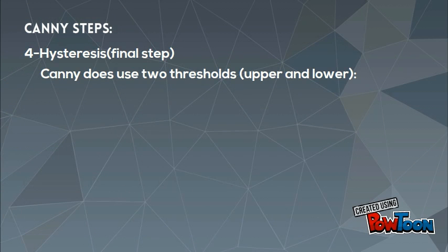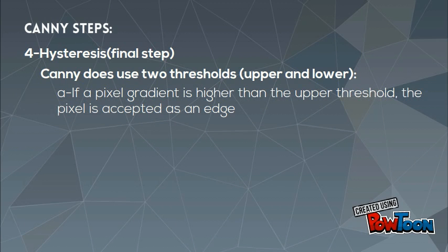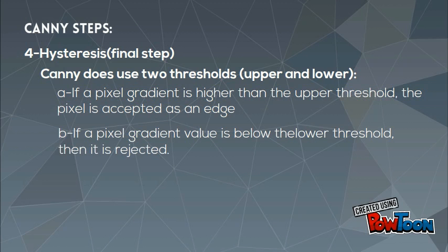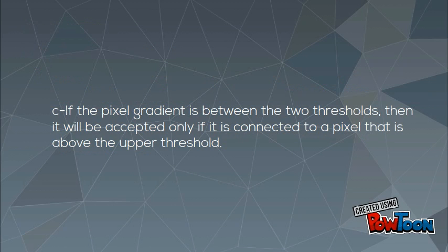The fourth step is hysteresis, the final step. Canny uses two thresholds, upper and lower. A: if a pixel gradient is higher than the upper threshold, the pixel is accepted as an edge. B: if a pixel gradient value is below the lower threshold, then it is rejected. C: if the pixel gradient is between the two thresholds, then it will be accepted only if it is connected to a pixel that is above the upper threshold.